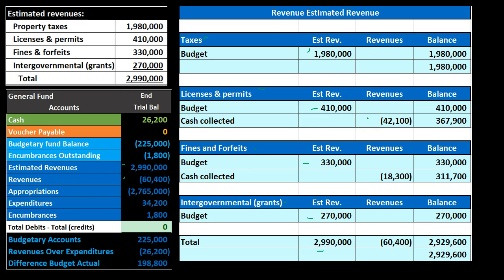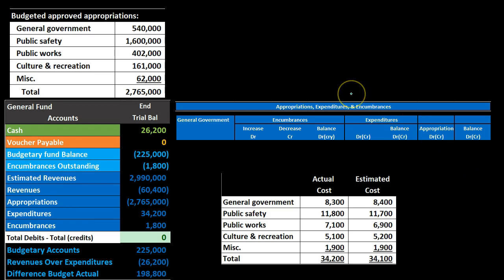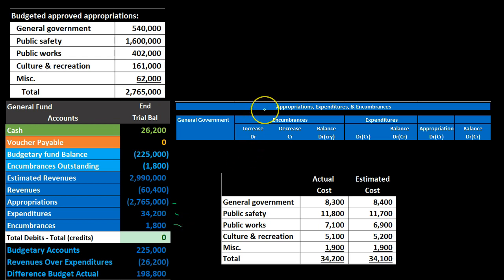Note that this subsidiary ledger tracks two things: the estimated account and its related normal account — both estimated revenues and revenues. Estimated revenues are increased by category in accordance with our information, and if we add up all categories, that number lines up to what's on our trial balance. For revenues we only had two items so far — license and permits and fines and forfeitures — which add up to $60,400. Then we have the balance comparing estimated revenue to revenues received thus far. We can do the same thing for appropriations, encumbrances, and expenditures.